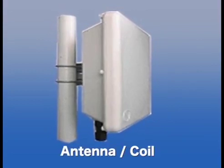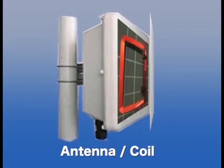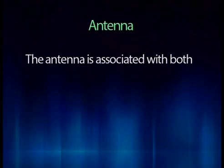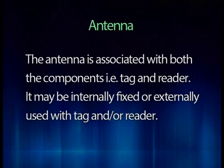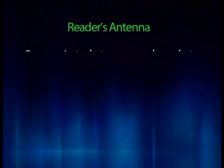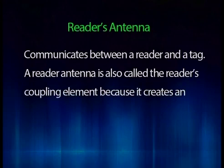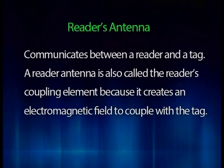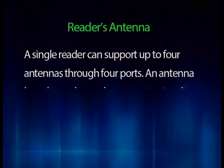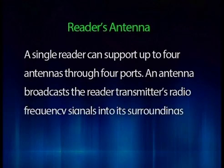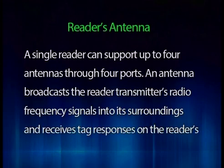The third component of a radio frequency identification system is an antenna or coil. The antenna is associated with both components — that is, the tag and the reader. It may be internally fixed or externally used with a tag and/or a reader. The reader's antenna is used to communicate between a reader and a tag, and is also called the reader's coupling element because it creates an electromagnetic field to couple with the tag. A single reader can support up to four antennas through four ports. An antenna broadcasts the reader transmitter's radio frequency signals into its surroundings and receives tag responses on the reader's behalf.